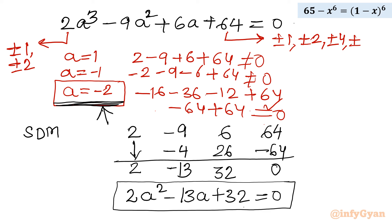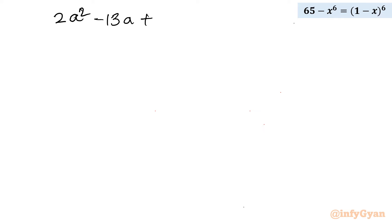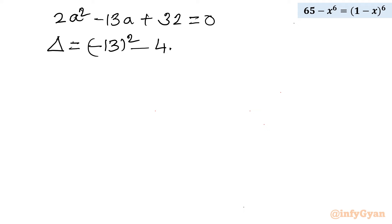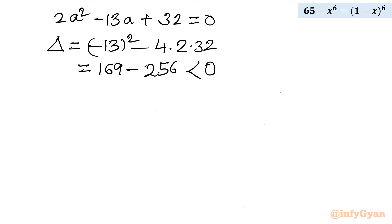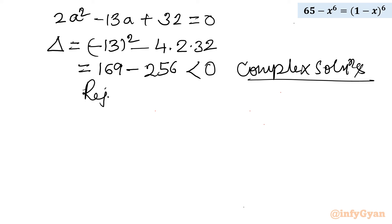Now we have to solve this quadratic equation 2a² minus 13a plus 32 equal to 0 to find the remaining two roots. Let us check only the discriminant: b² minus 4ac equals (minus 13)² minus 4 times 2 times 32, which is 169 minus 256. This is a negative number, so complex solutions will be generated. We reject this quadratic equation for our real solution. The only accepted solution is a equal to minus 2.